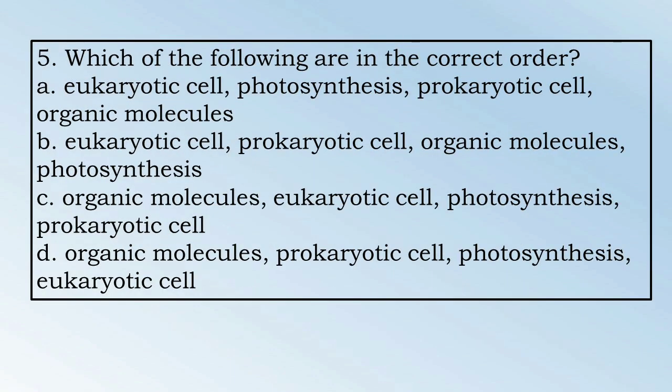Number 5. Which of the following are in the correct order? A. Eukaryotic cell, photosynthesis, prokaryotic cell, organic molecules. B. Eukaryotic cell, prokaryotic cell, organic molecules, photosynthesis.